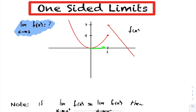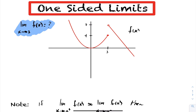As I approach 3 from the left-hand side, you can see that my function is approaching 4. However, as I approach 3 from the right-hand side, we see that my function is approaching the value of 7. So because of this jump or break in the graph, we have here a point of discontinuity. So this function is not continuous, and evaluating the limit at 3 becomes a question.